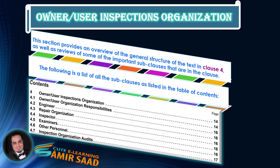This section provides an overview of the general structure of the text in Clause 4, as well as reviews of some of the important sub-clauses. The following is a list of all the sub-clauses as listed in the Table of Contents. In the following slides, we highlight important information contained in Clause 4 accompanied by the sub-clauses.